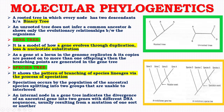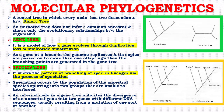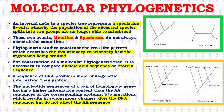A species tree shows the pattern of branching of species lineages via the process of speciation. For example, you can see in the diagram that this is the speciation event where species A gives rise to species B, then species C, then D. Speciation occurs by the population of the ancestral species splitting into two groups that are unable to interbreed. An internal node in a gene tree indicates the divergence of an ancestral gene into two genes with different DNA sequences, usually resulting from a mutation. An internal node in a species tree represents a speciation event whereby the population of the ancestral species splits into two groups no longer able to interbreed.